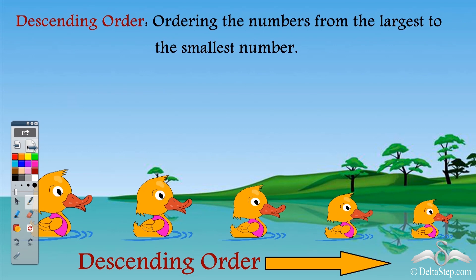What is descending order? Just the opposite - ordering the numbers from the largest to the smallest number, just like these ducks are arranged from the biggest to the smallest duck.